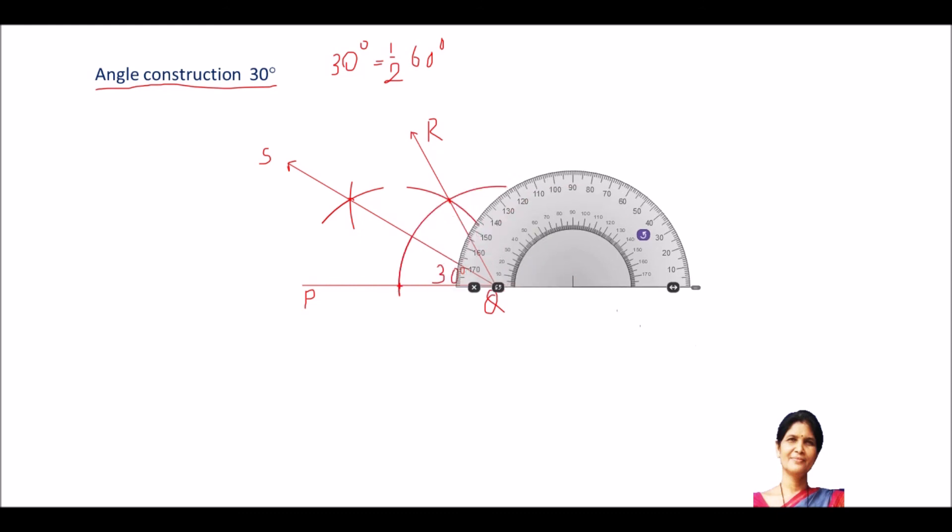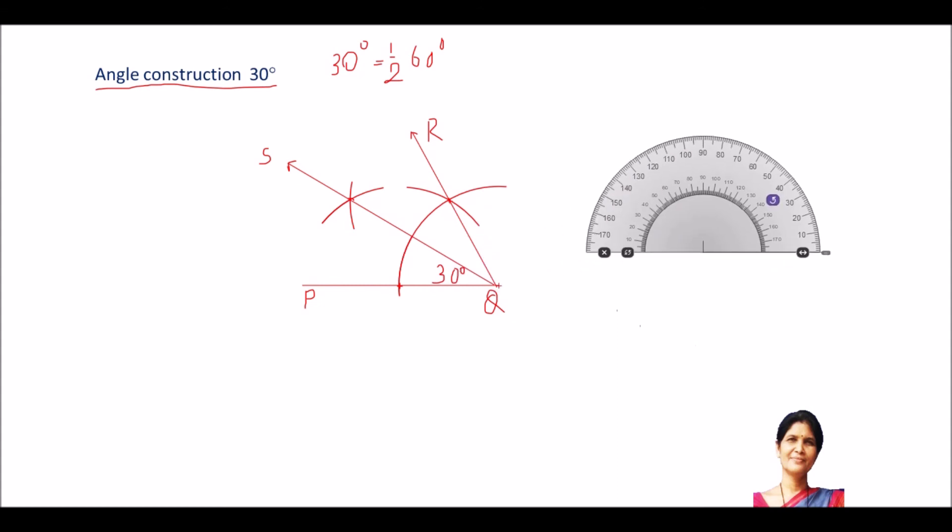So, we are able to do it. Now, you will write your construction part. What you will write? We will write that this SQP angle, SQP angle is equal to 30 degree.